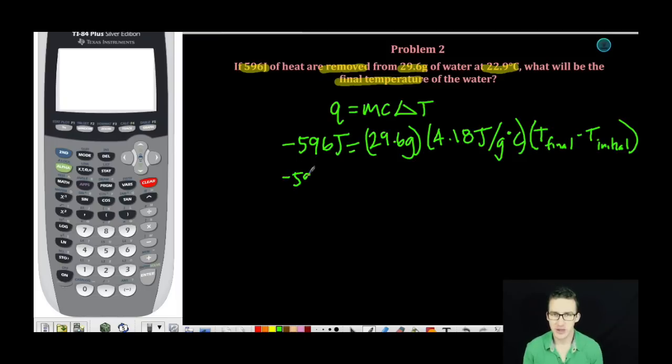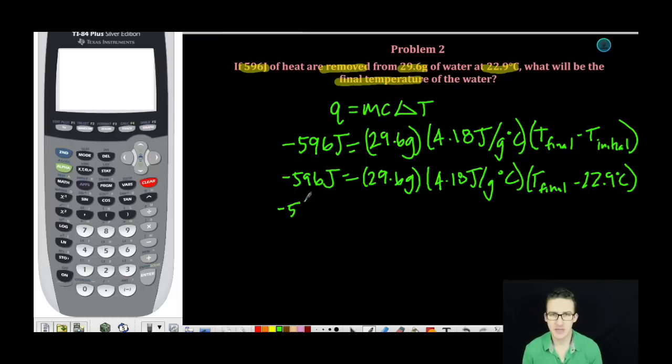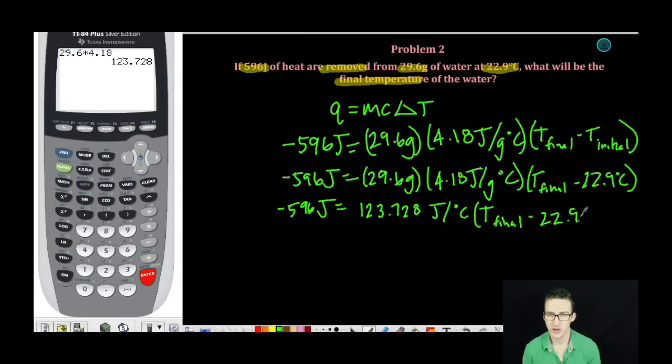Now I'm just going to rewrite this, but include my initial temperature in the calculation. Next thing I'm going to do is take a quick hop skip over to my calculator to multiply these two numbers together to give us a value of 123.728. My units of grams will cancel out. So I'm going to have just joules per degree Celsius times T final minus 22.9 degrees Celsius.